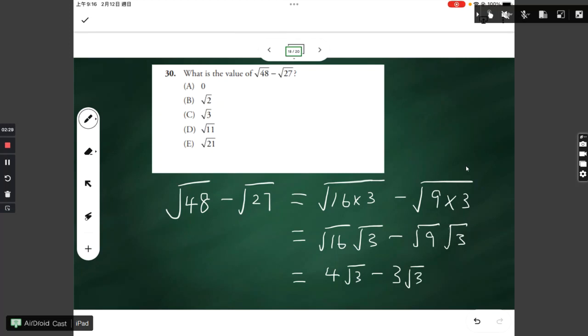So you have 4 square root of 3 minus 3 square root of 3. They have a common factor of square root of 3. You pull that out and then you are left with 4 minus 3. 4 minus 3 is just 1, and therefore you are left with only a single square root of 3.